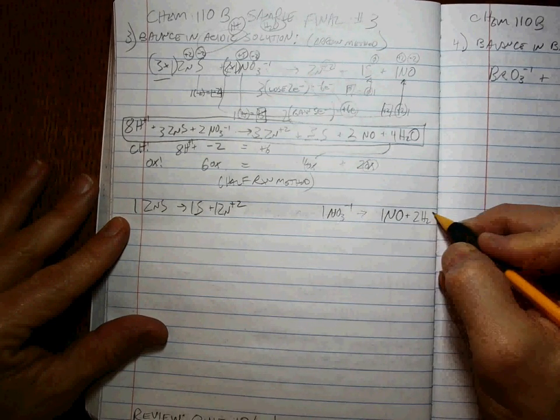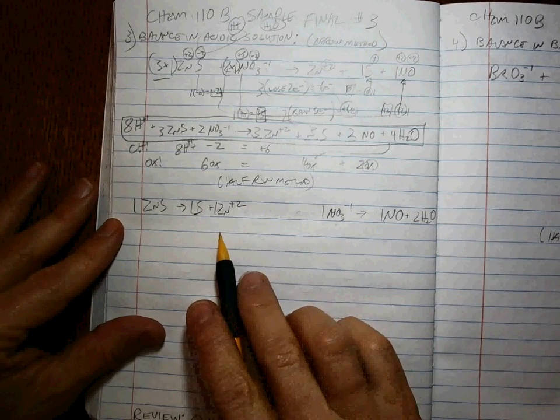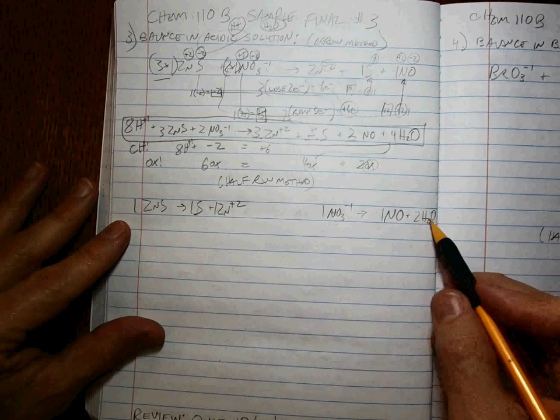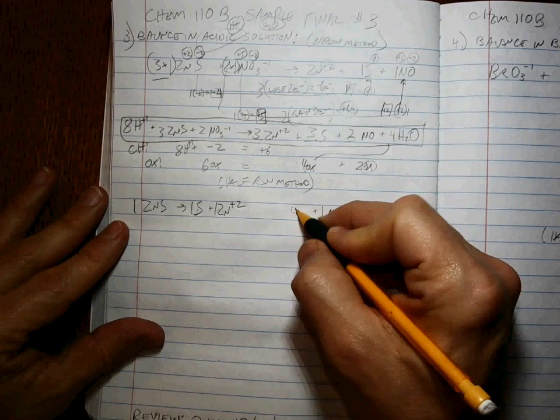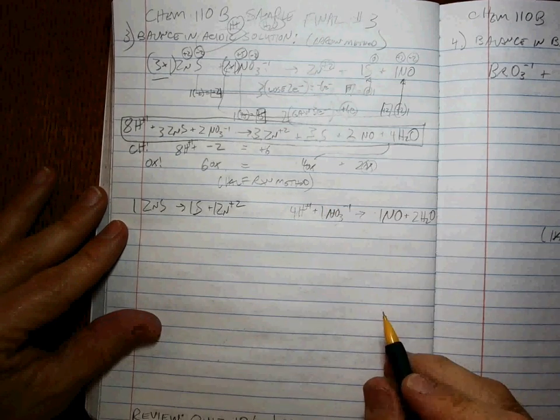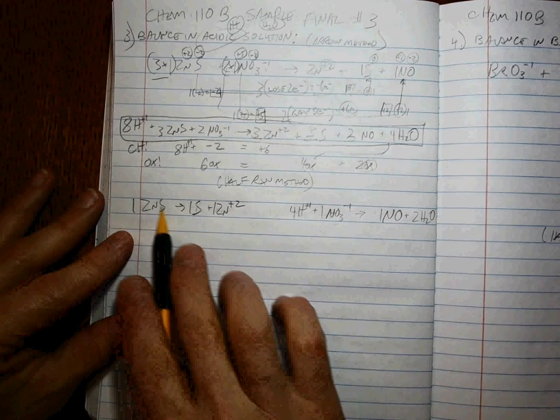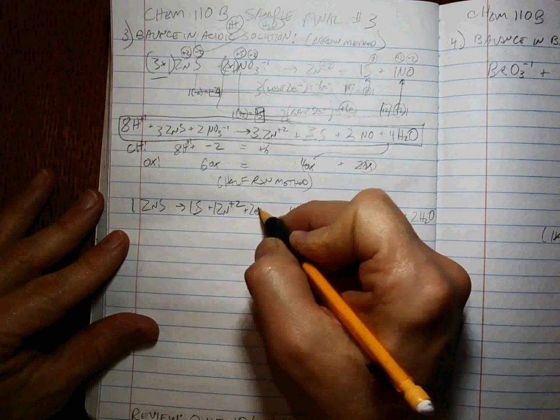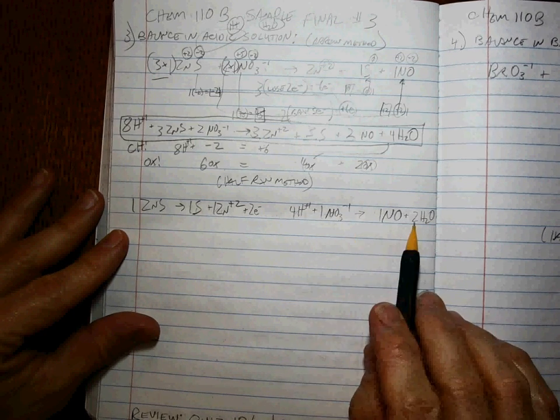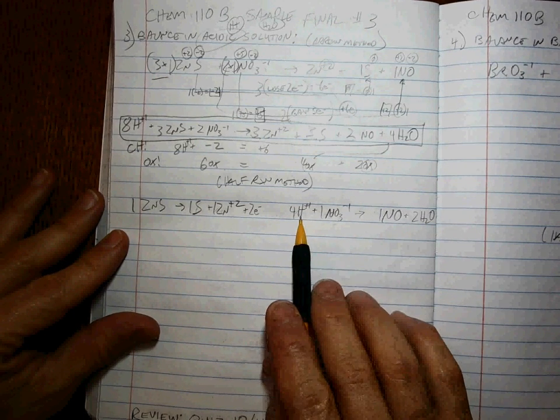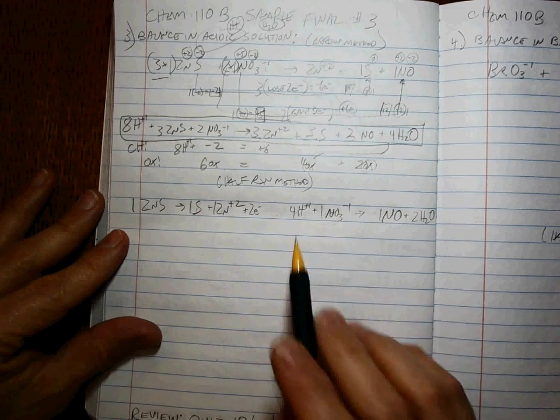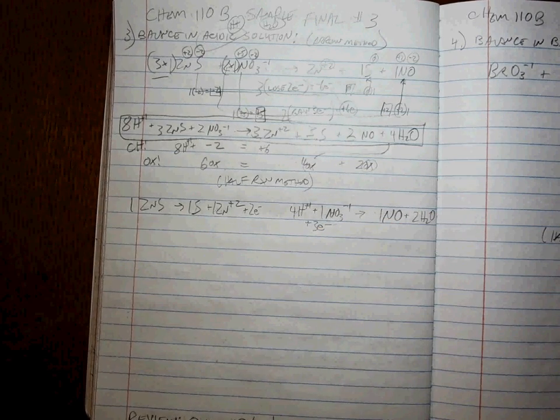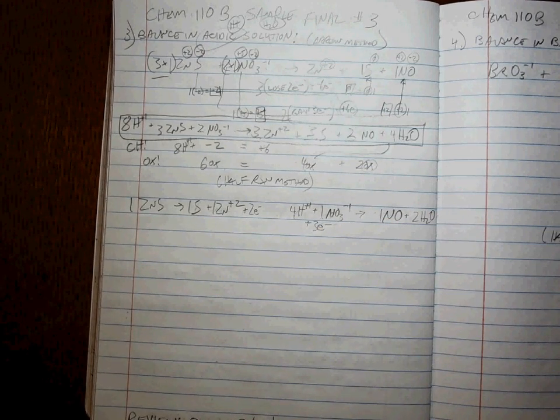All right, now we add H+ to balance the hydrogens. Again, there's none here. Over here we've got four hydrogens, so we add four H+. Now we have to add electrons to balance the charge. This is zero, zero, so we have to add two electrons and we're even on charge. Over here we're zero, this is +4 and a -1, so we need to add three electrons. All right, so we're balanced in acidic solution.